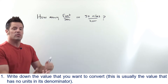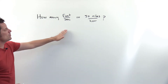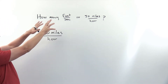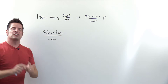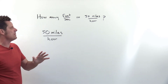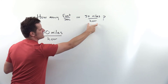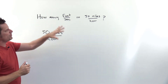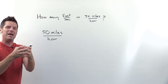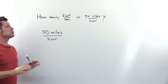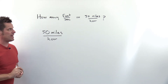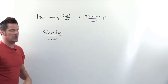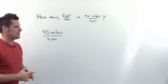Step one: write down the value we are asked to convert. The only value given is 50 miles per hour. My usual strategy is to pick a value with no denominator units, but 50 miles per hour does have denominator units — it has a unit underneath the fraction line. This is an exception where the only term given has denominator units, so we just have to deal with it.